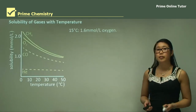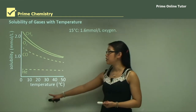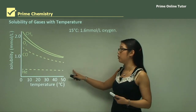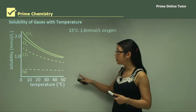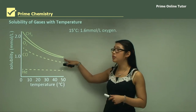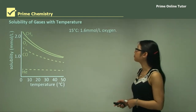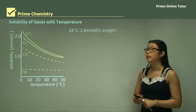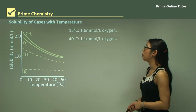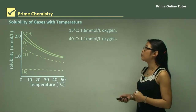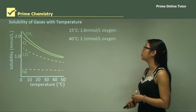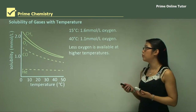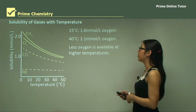When we look at the solubility of gases with temperature, as we increase temperature from 0 to 50 degrees, we get a decrease in the solubility of gases — most of them except helium. What's particularly important is the decrease of oxygen as temperature increases. At 15°C, we can get 1.6 millimoles per litre of dissolved oxygen, but at 40°C we only get 1.1 millimoles per litre.